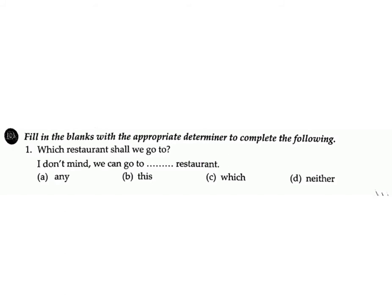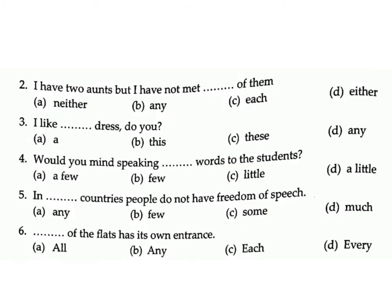Exercise D: Fill in the blanks with the appropriate determiner. (1) 'Which restaurant shall we go to?' — 'I don't mind, we can go to any restaurant.' Answer: a) any. (2) 'I have two aunts but I have not met either of them.' Answer: d) either.